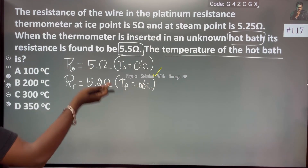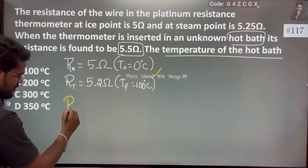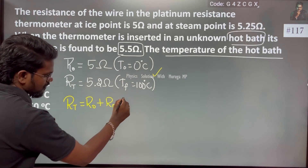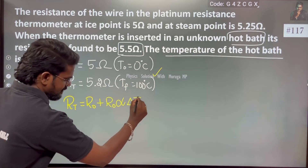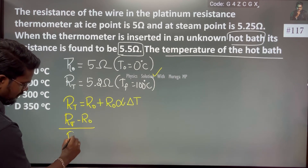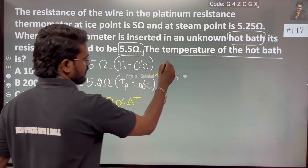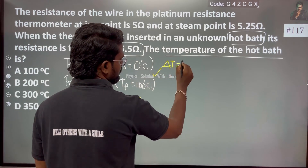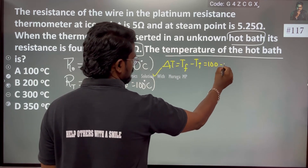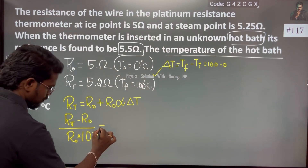We write RT = R0 + R0·α·ΔT. Here alpha is the temperature coefficient, initial temperature is 0°C, final temperature is 100°C, so ΔT = 100 - 0 = 100, which gives us alpha equals 1/100.